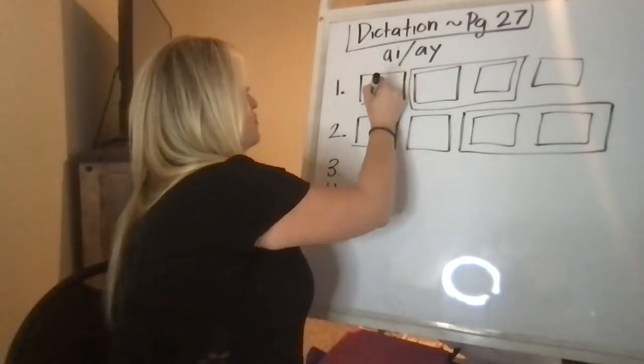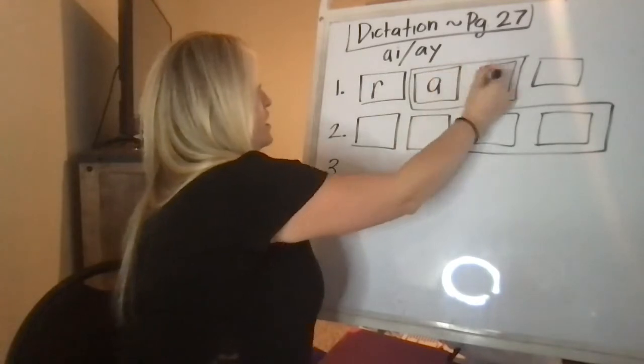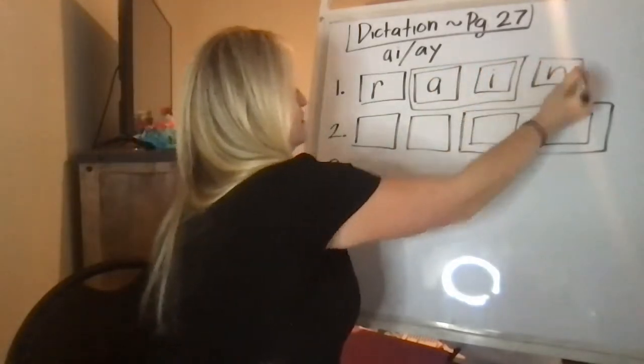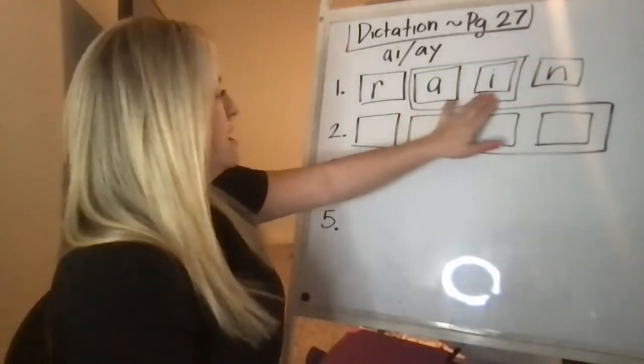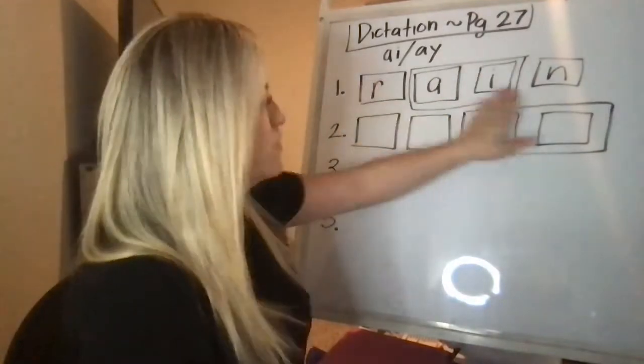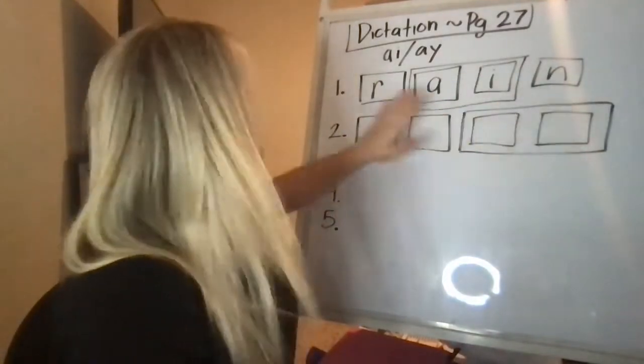That would look like this: R-A-N. Okay, there's your A-I. If it was just an A, it'd be ran, right? So it's rain.